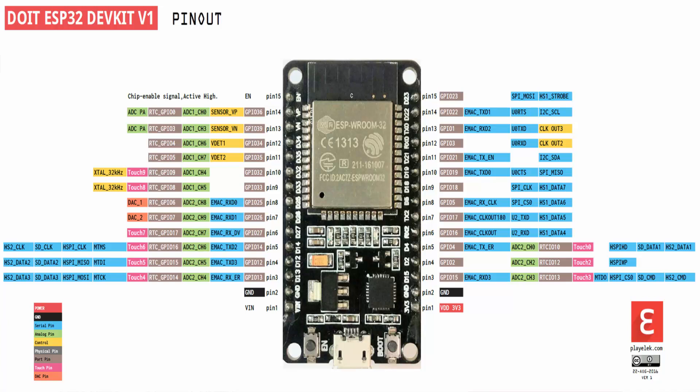For example, GPIO 34, GPIO 35, 36, 37, 38, and 39 can only be used as digital input pins — we cannot use them as digital output pins. So we have the option to use 18 general purpose input output pins as digital output pins, which are enough pins to use in any embedded system project.